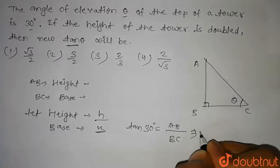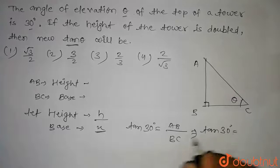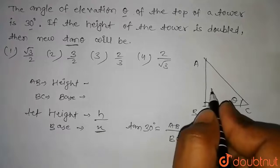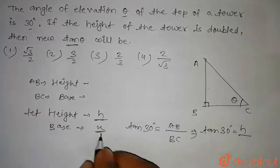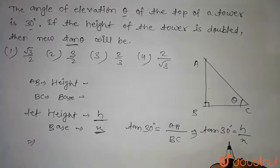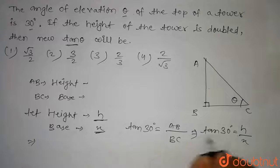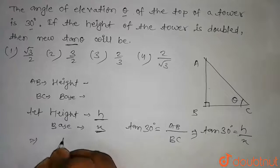So we get tan 30 degrees equal to AB. AB is the height of the tower, and we have taken height as h and the base as x. So we have tan 30 degrees equal to h divided by x.